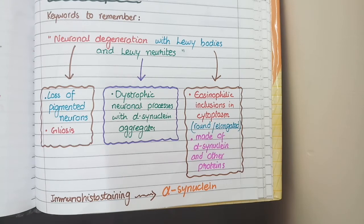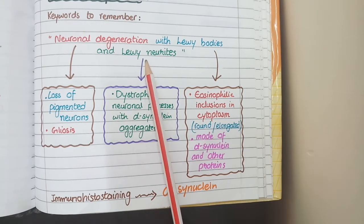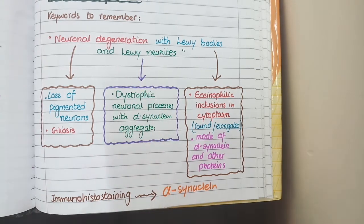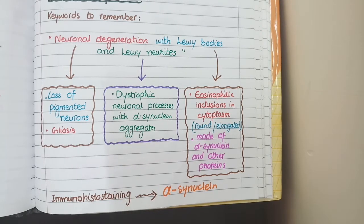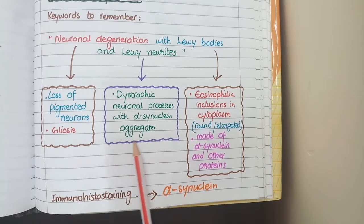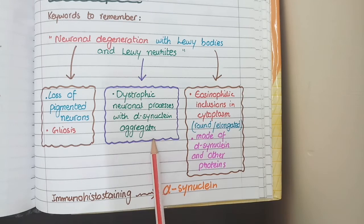The third keyword is Lewy neurites. This means that you will see dystrophic neuronal processes with alpha-synuclein aggregates. Dystrophic means degenerated, and neuronal processes means dendrites and axons. So in this degenerative disorder you will see dystrophic neuronal processes with alpha-synuclein aggregates.